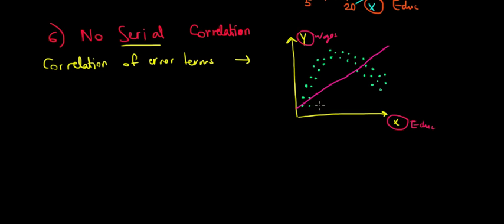What we can notice is that for specific values of x of education, let's say starting at three years of education until 10 years of education, we can see that we're having a positive difference between the actual value and the regression line. So the error terms are positive...